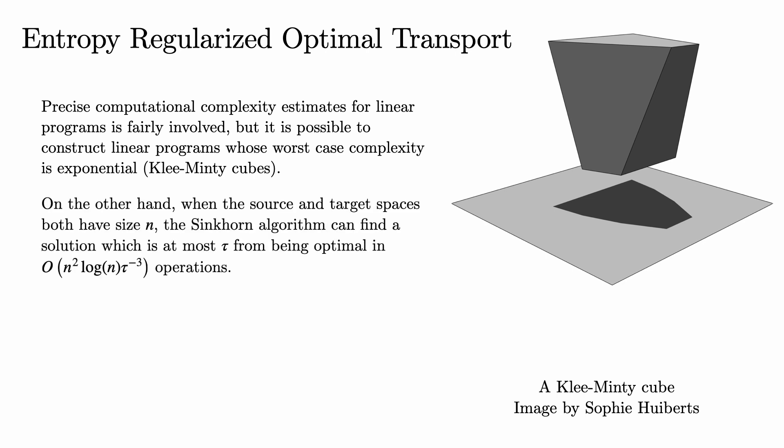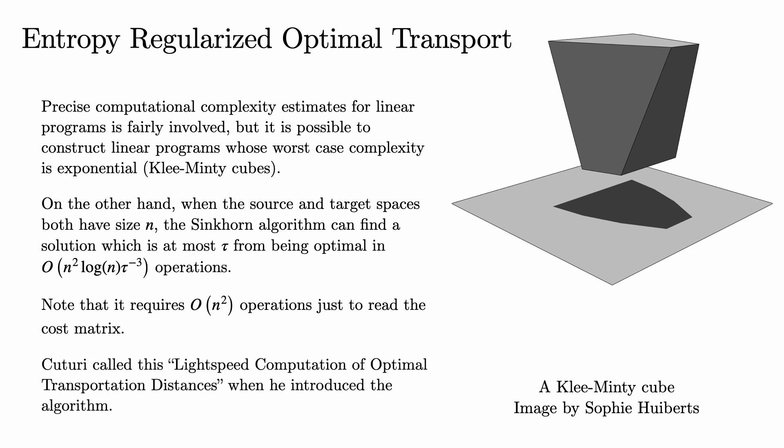But it is possible to construct linear programs whose worst case complexity is exponential. These are known as Klee-Minty cubes, and there are many papers studying their properties. On the other hand, when the source and the target spaces both have size n, it is possible to approximate the entropy-regularized optimal transport problem using something known as the Sinkhorn algorithm, which can find a solution, which is at most tau from being optimal, in big O of n squared log n over tau cubed operations. Note that it requires big O of n squared operations just to read the cost matrix. So this is fairly close to the theoretical limit of how quickly this problem can be solved. For this reason, Marco Cuturi called this light speed computation of optimal transport distances when he introduced this algorithm.